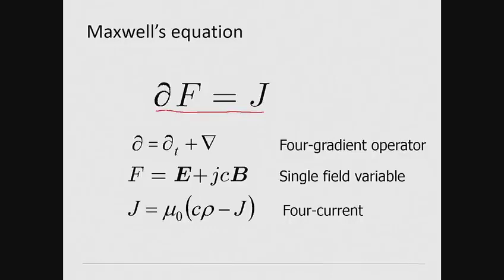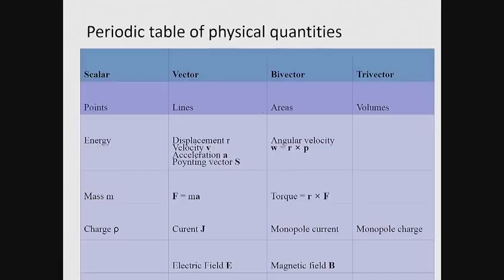We have defined the four gradient, a single field variable F and a source term which combines charges and currents. A further advantage of Clifford's more general formalism is the ability to more appropriately represent physical quantities as shown in the table.